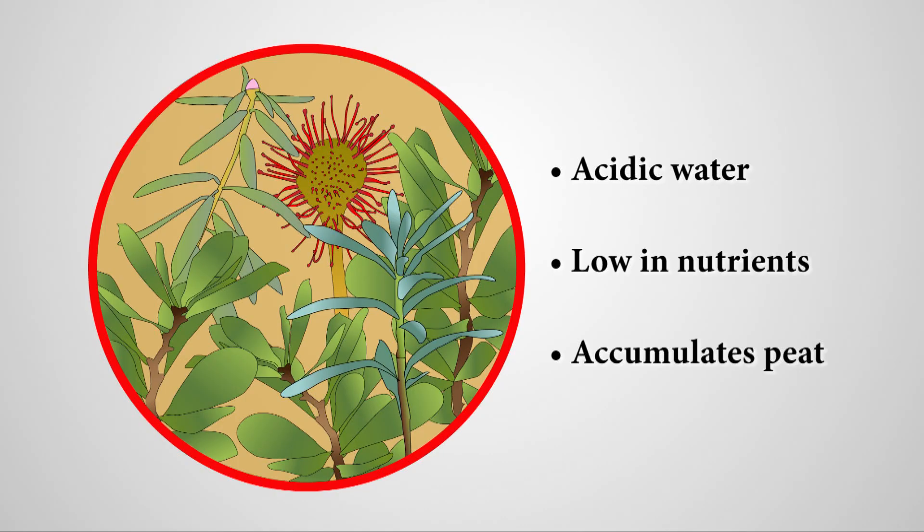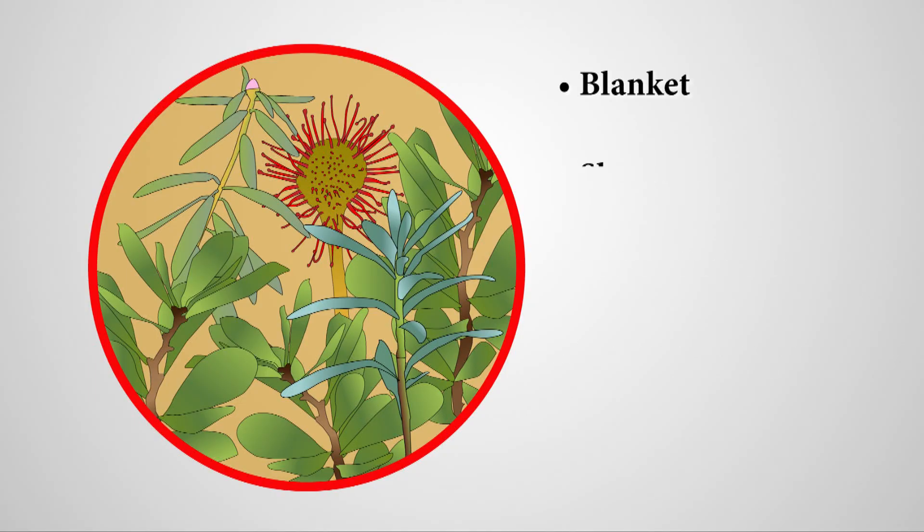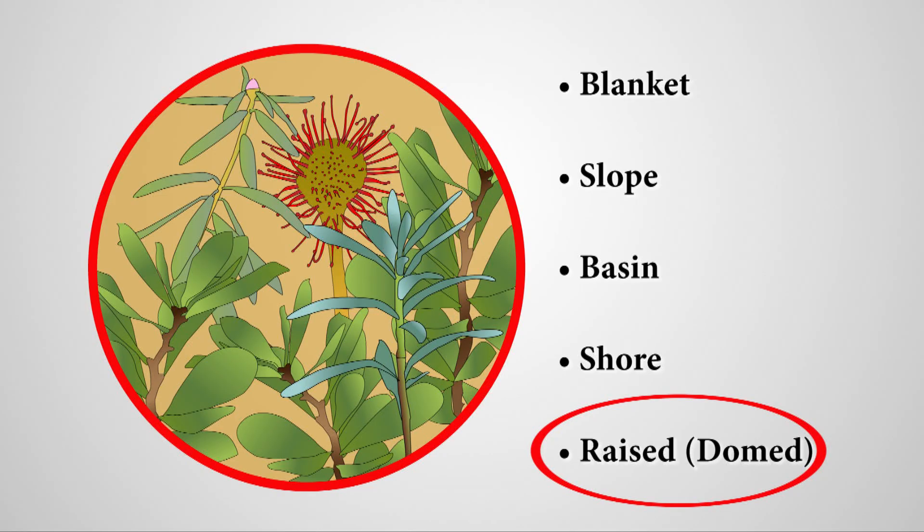It accumulates peat, a deposit of dead plant material, which is usually made from sphagnum moss. There are five different types of bogs. Burns Bog is a raised bog, the largest and last remaining raised peat bog in the northern hemisphere.